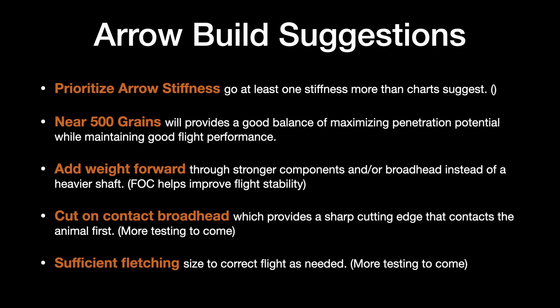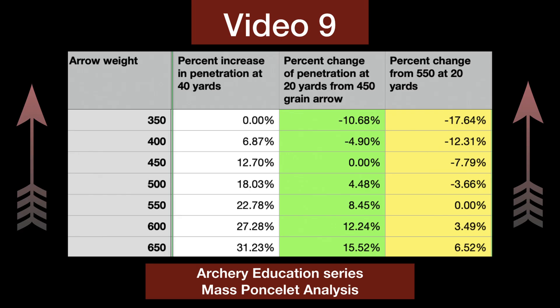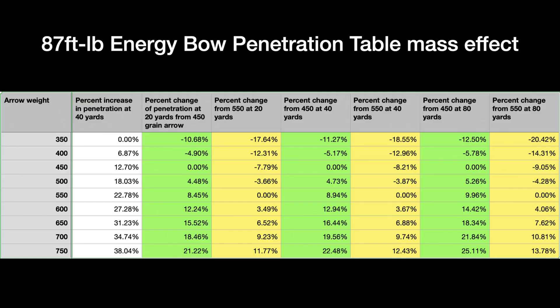Generally speaking, if I was going to select a well-rounded arrow for any game — maybe not including the largest African game — this would be my suggestion. First, prioritize arrow stiffness: the stiffer your arrow while maintaining good flight, the better penetration performance you'll get on target. After that, it would come down to an arrow in the weight range of 500 grains. I selected 500 because it's a good middle ground on weight, but still gives you enough mass to select strong components — strong broadheads, strong inserts, a durable arrow shaft.